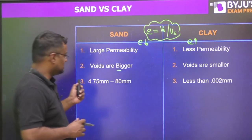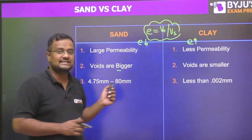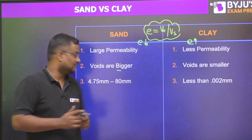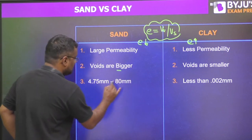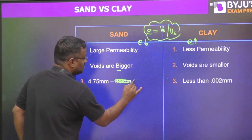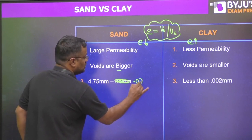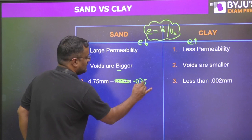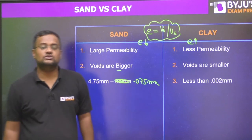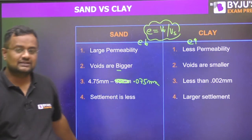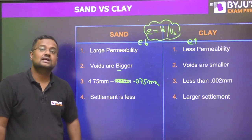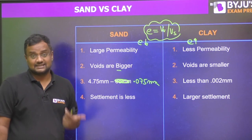Sand size ranges from 4.75 mm to 0.075 mm, while clay is less than 0.002 mm. We can classify and distinguish these on the basis of sieve analysis. Settlement is less in sand.